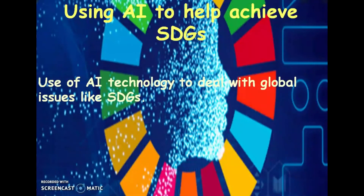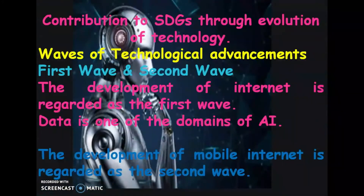Using AI to help achieve SDGs — contribution to SDGs through the evolution of technology. The evolution of technology includes four different waves, best termed as waves of technological advancements.